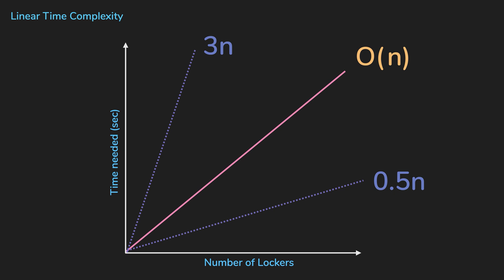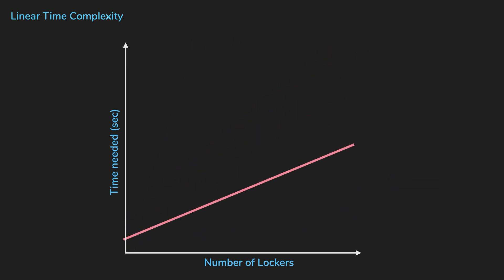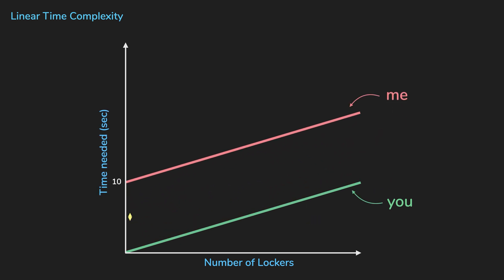Some algorithms might have a slow startup time. Let's say you and me, we are both able to open a locker in half a second. But for me, I have to eat a sandwich for 10 seconds before I start to search. Even though I have a longer startup time, my algorithm is still asymptotically equivalent to yours.